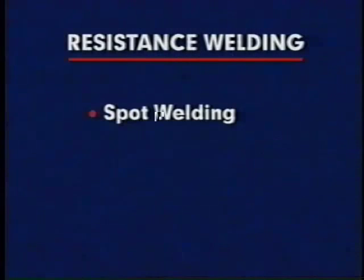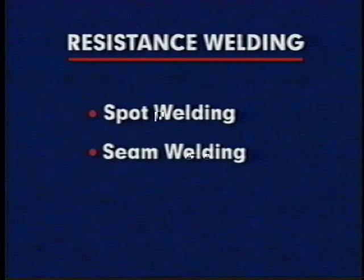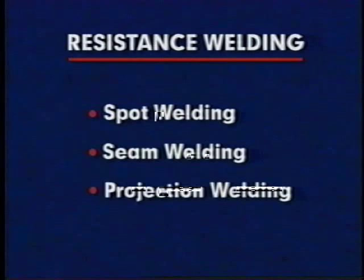Very high electric currents are used to quickly produce the resistance heat necessary for fusion. The three principal types of resistance welding are spot welding, seam welding, and projection welding.